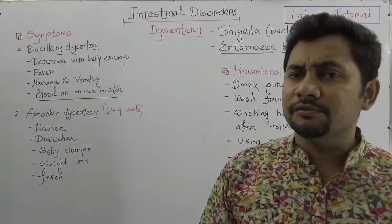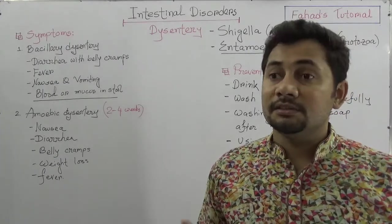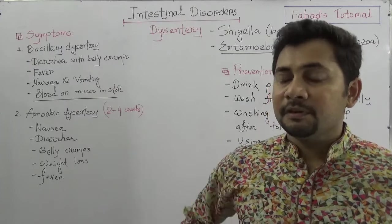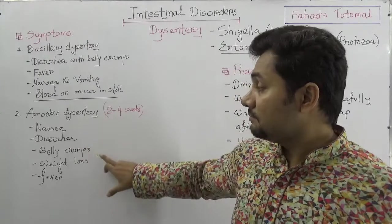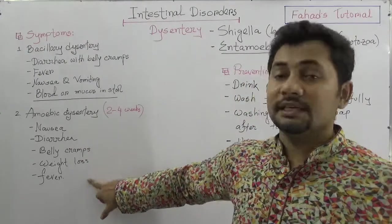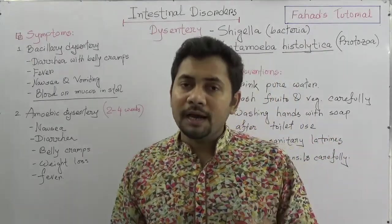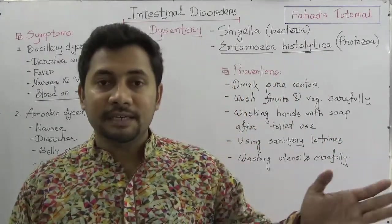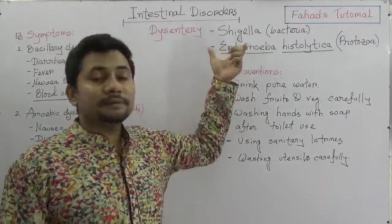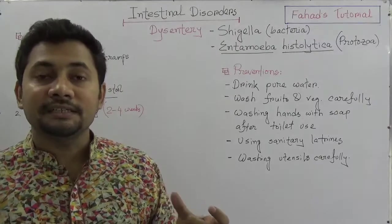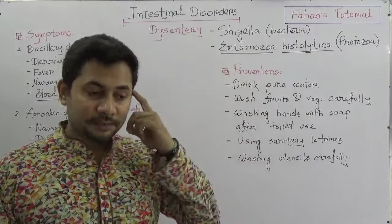In Amoebic Dysentery, the incubation period can be two to four weeks. Sometimes symptoms are mild and not noticeable, but as dehydration worsens you see nausea, diarrhea, belly cramps, weight loss, and fever as the main symptoms. Dysentery is divided into Bacillary and Amoebic because Bacillary Dysentery is caused by the bacterium Shigella, while Amoebic Dysentery is caused by the protozoan Entamoeba histolytica.